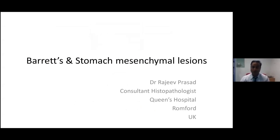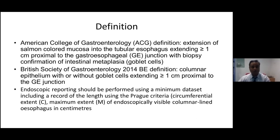Barrett's and these mesenchymal lesions form part of an important biopsy which anyone receives in the pathology department, and it's important to discuss and understand how reporting of Barrett's is undertaken. The American College of Gastroenterology defines Barrett's as extension of salmon-colored mucosa into the tubular esophagus extending more than or equal to one centimeter proximal to the gastroesophageal junction, with bioptic inflammation or intestinal metaplasia or goblet cells.